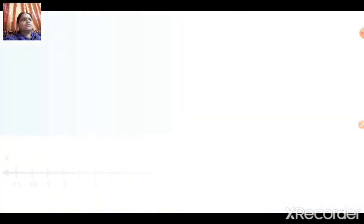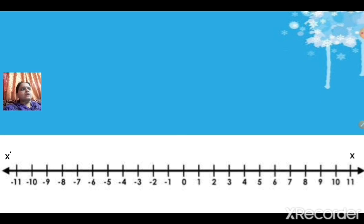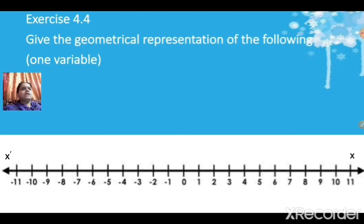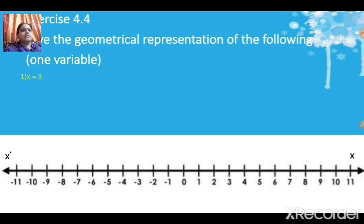Question number 1 is given here as: give the geometrical representation of the following with one variable. In the textbook it is given as with one variable as well as by two variables. First I will explain with one variable and then by two variables for the same equation. So don't get confused — I will explain both parts very clearly.